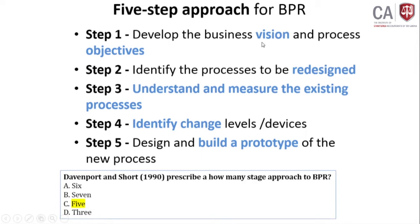Step 2: identify the processes to be re-designed. Processes that are to be re-designed have to be identified. There can be some processes that are malfunctioning and giving very low income to the organization. Sometimes there are no more people to operate them, and sometimes there is no technology involvement in those processes, causing delays. So you have to identify those processes and re-design them.